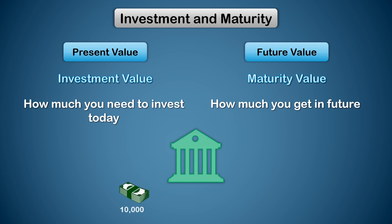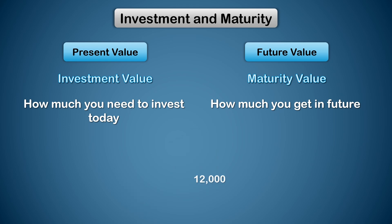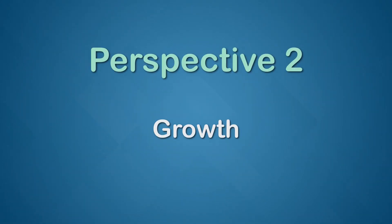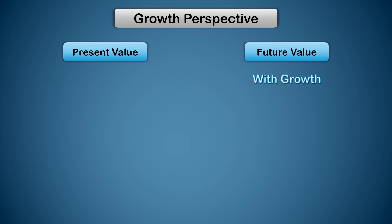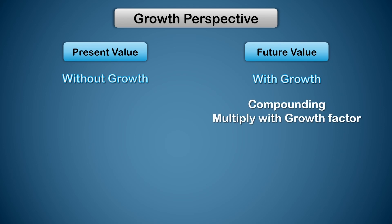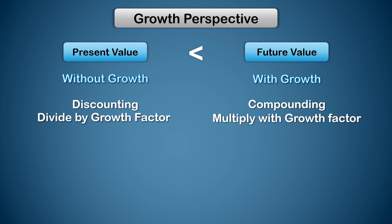For example, if you deposited 10,000 rupees in a bank today and you are going to get 12,000 after two years, the 12,000 is called future value and the 10,000 is called present value. Another way to describe this is from the growth angle: future value is the value of money with growth included, and present value is with growth excluded. To calculate future value we do compounding — we multiply the investment with the growth factor. To calculate present value we do discounting, which is dividing by the growth factor. As a result, future value will always be higher than present value.